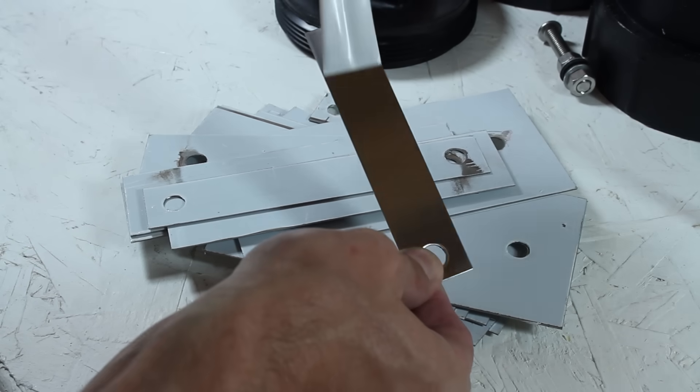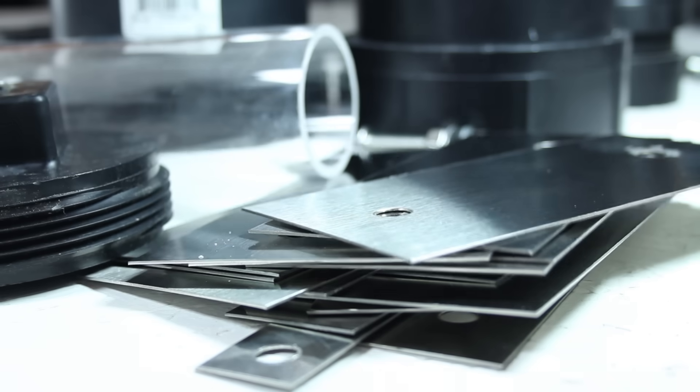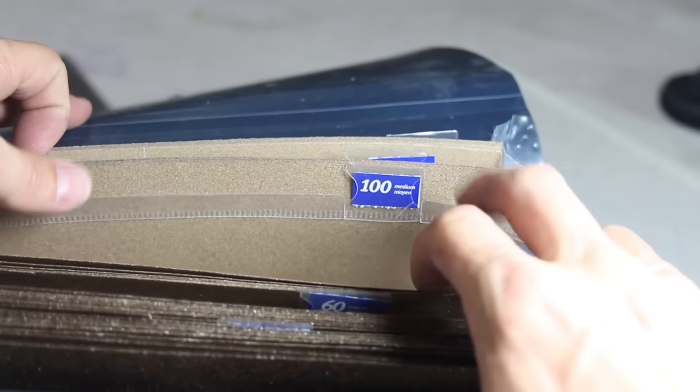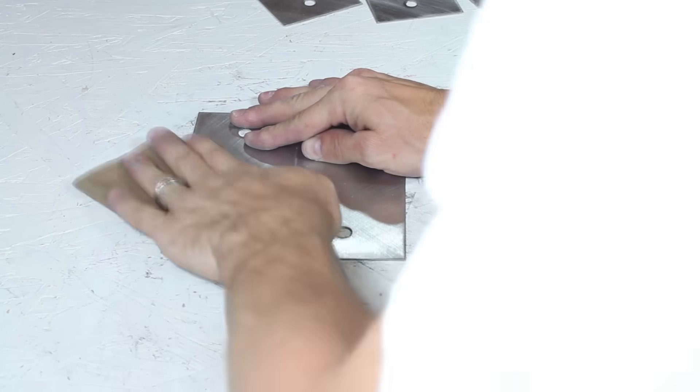When I peel the protective layer from the plates it reveals a beautiful and attractive surface. But that's not what we want for this project. Instead we'll need to hunt down some sandpaper. This is 100 grit, and I'll place two plates in a diamond shape and sand them from top to bottom. Then rotate 90 degrees and repeat. These scuff marks will increase the surface area on the plates and increase the efficiency of the generator.